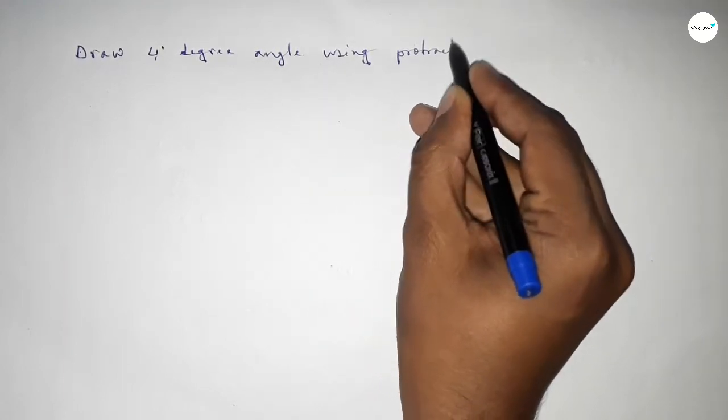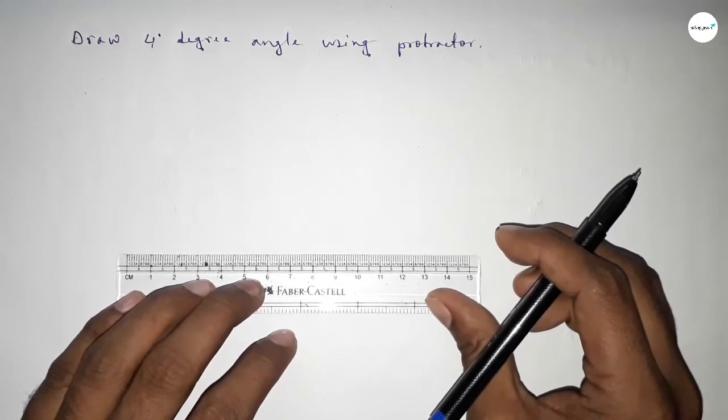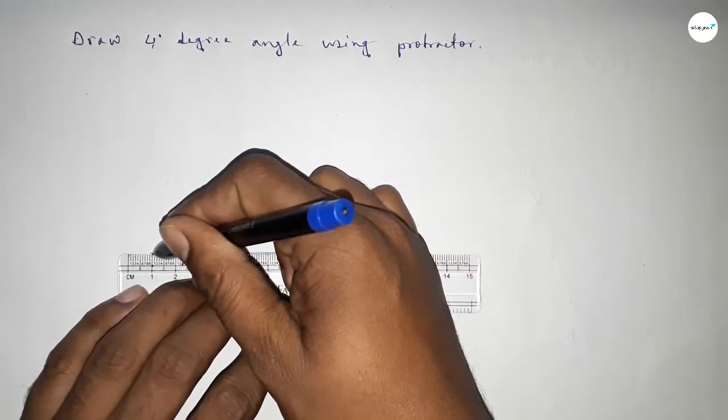So let's start the video. First of all, we have to draw here a line of any length and take point B here and point C here.